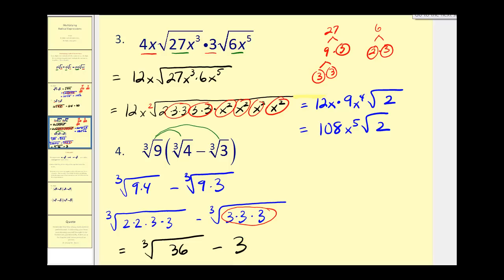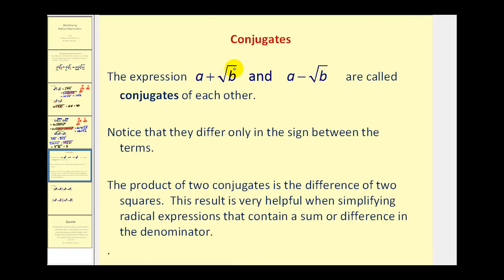Let's talk about conjugates now. The expressions a plus the square root of b and a minus the square root of b are called conjugates of each other. Notice they differ only in the sign between the terms — one is addition and one is subtraction. The product of two conjugates is the difference of two squares, and this result is very helpful when simplifying radical expressions that contain a sum or difference in the denominator, which we'll see in the video for division of radical expressions.